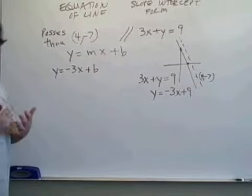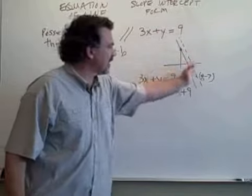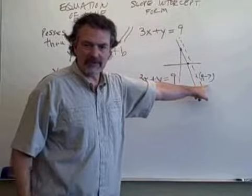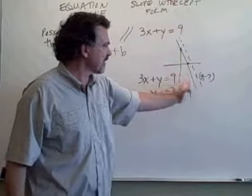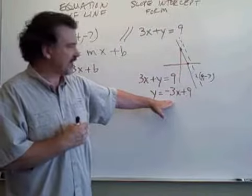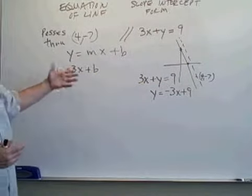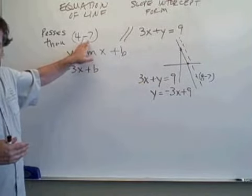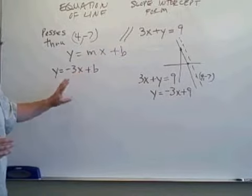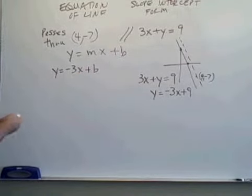Parallel lines have the same slope. So if our line that passes through 4, negative 7 is parallel to this line, this line had a slope of negative 3, our line has a slope of negative 3. Now, again, we simply take the point we have, substitute those values for x and y, and we can solve for b.